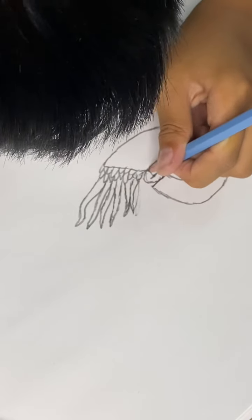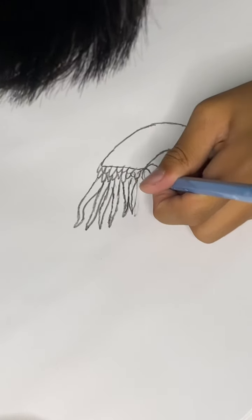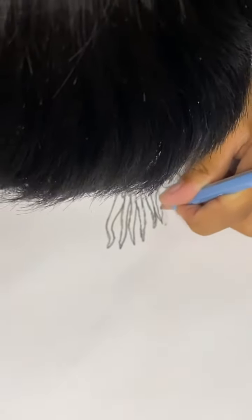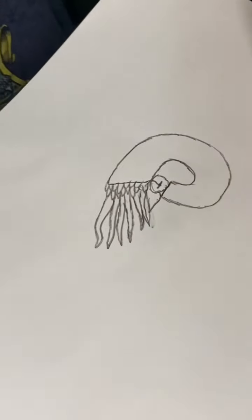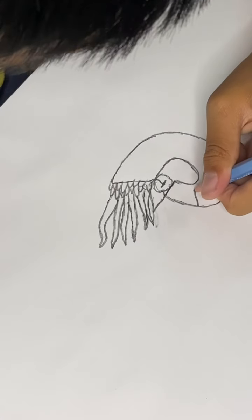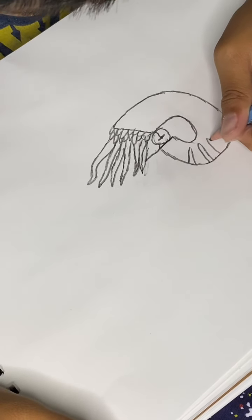Then you're going to want to do kind of a triangle that's not such a triangle, like this. Then you can also do its little stripes. You can do kind of ones that are pointy and ones that are not.